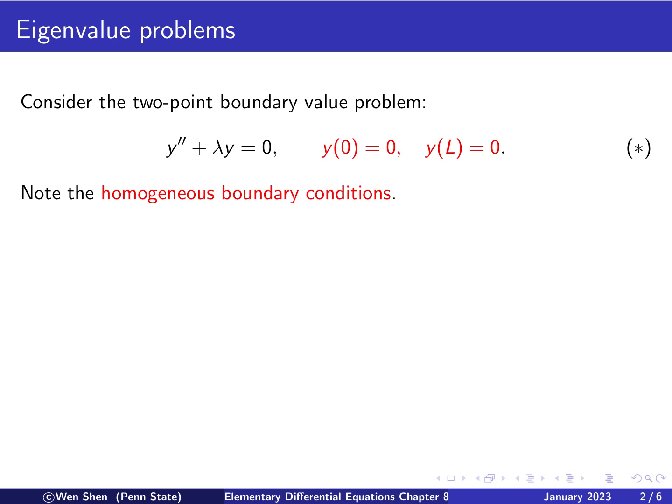I would like to call your attention to the boundary conditions. They are given as 0. And so these are called homogeneous boundary conditions. So for eigenvalue problems, we will always have homogeneous boundary values.